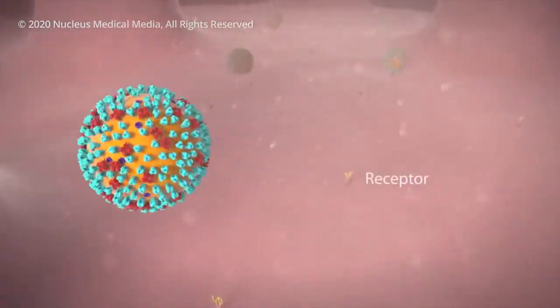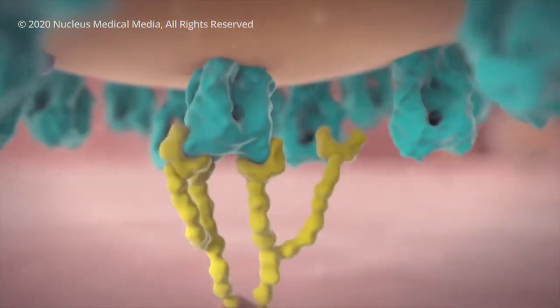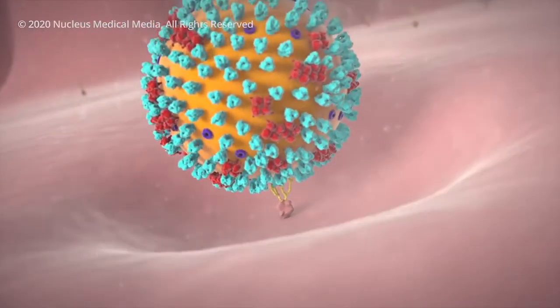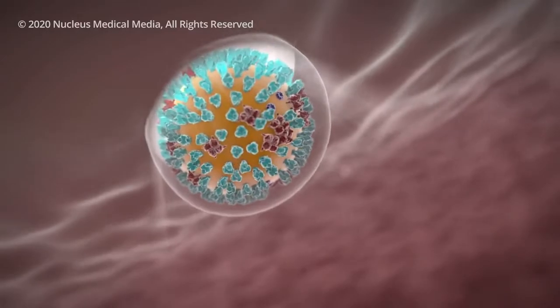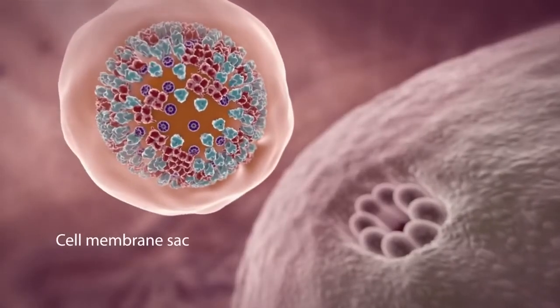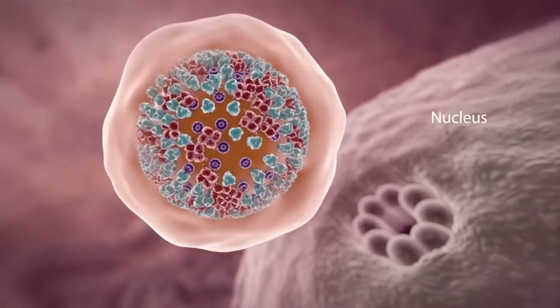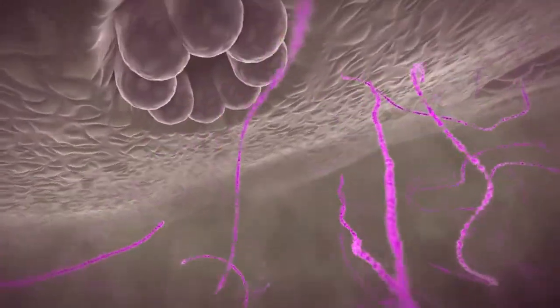One spike on the virus inserts into a receptor molecule on your healthy cell membrane like a key in a lock. This action allows the virus to get inside your cell. A typical flu virus would travel inside a sac made from your cell membrane to your cell's nucleus that houses all its genetic material.